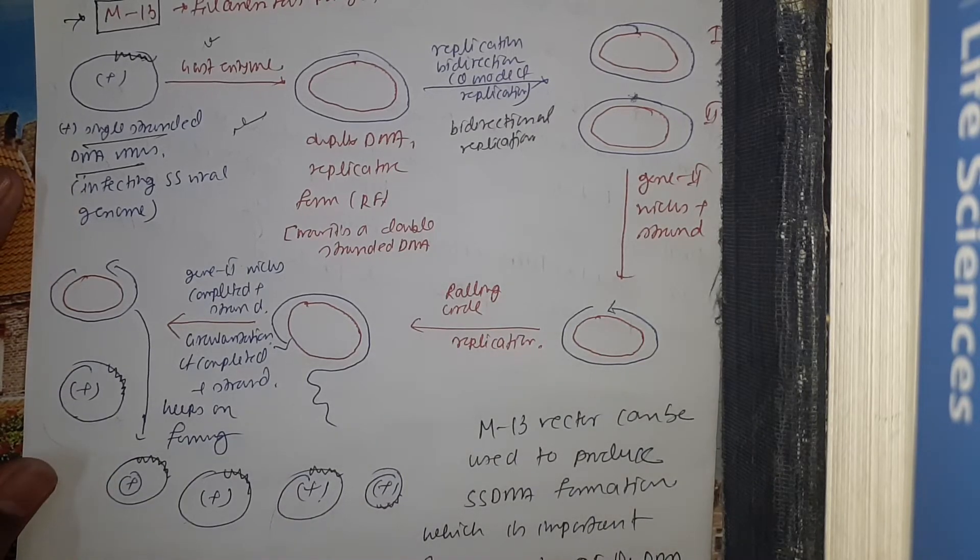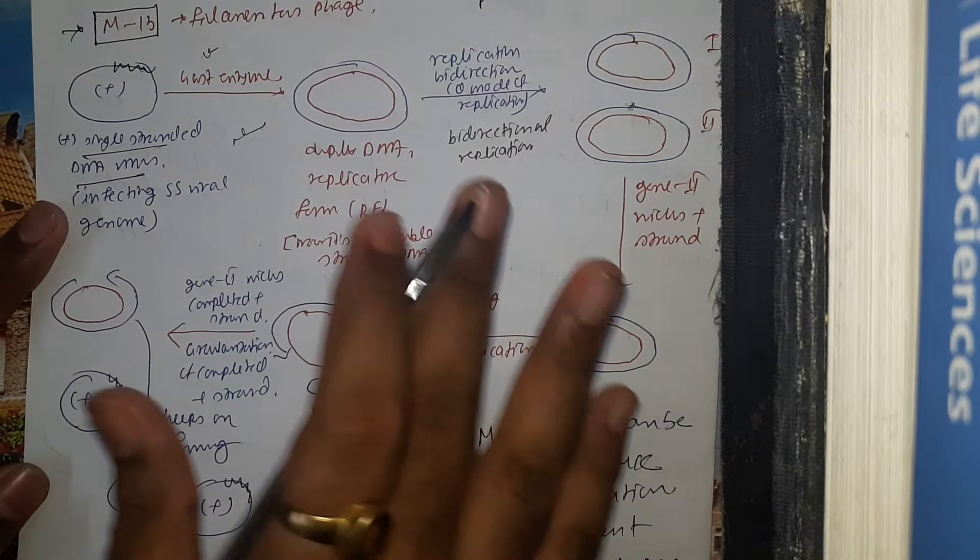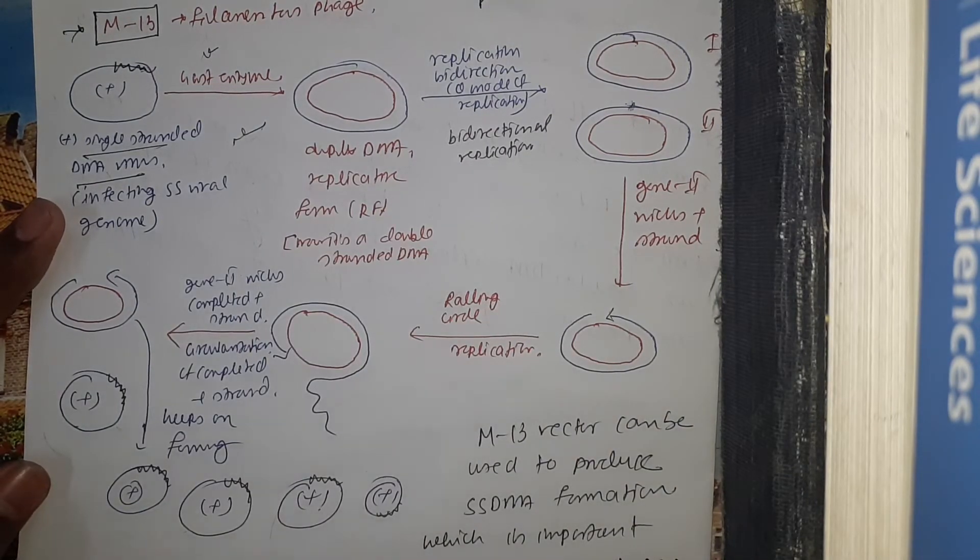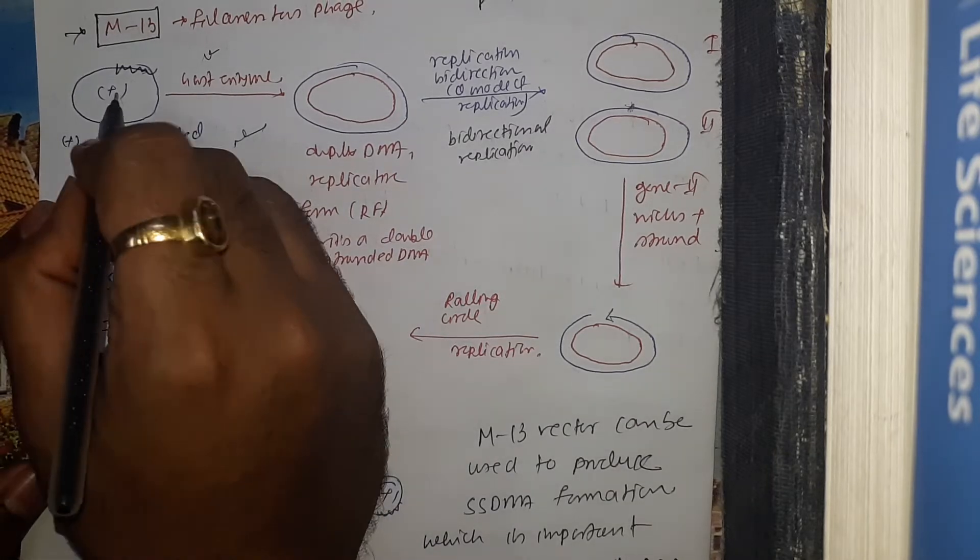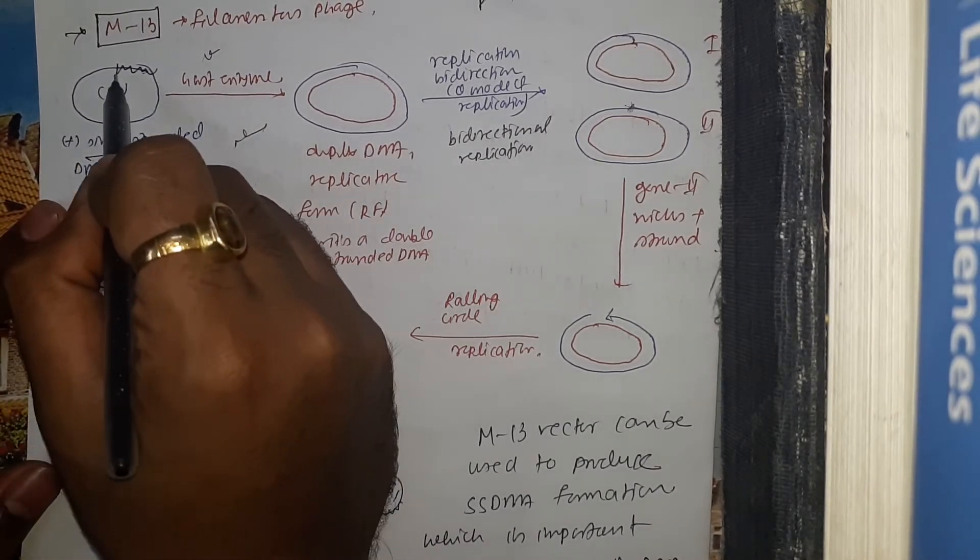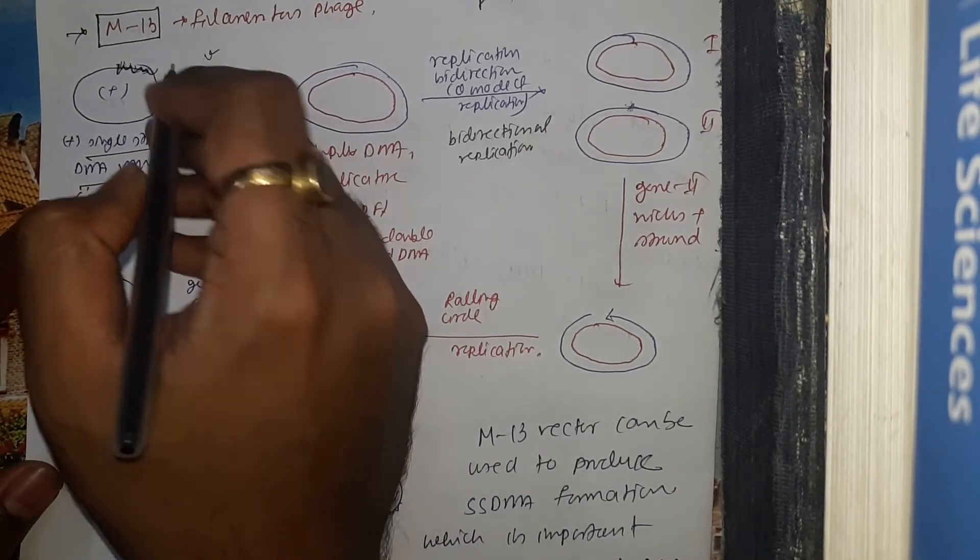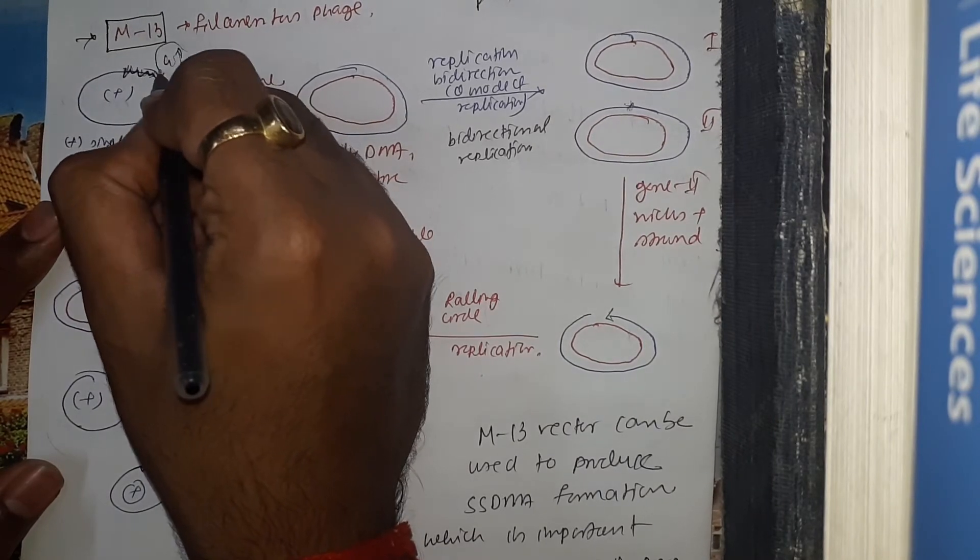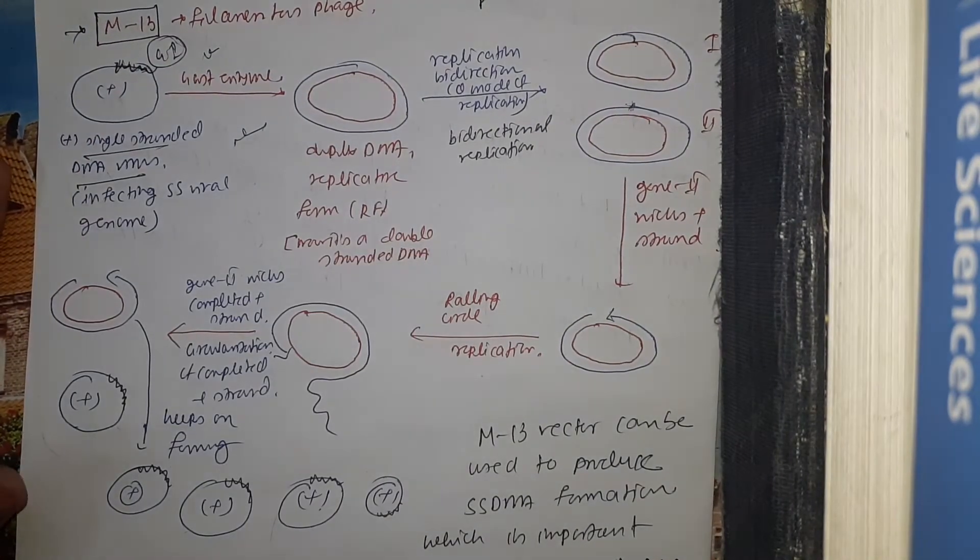That is the overall idea of M13 replication. After studying the replication of the M13 virus, scientists thought that if we somehow insert our gene of interest in the positive sense strand and then allow the filamentous phage to process its own replication,